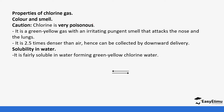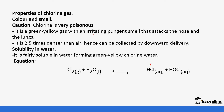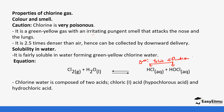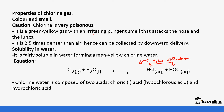When chlorine reacts with water it forms hypochlorous acid and hydrochloric acid, which form the yellow-green solution. Later on we'll discuss what happens with these two acids, but for now we'll note that hypochlorous acid also dissociates in the presence of sunlight.